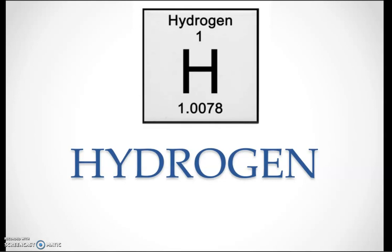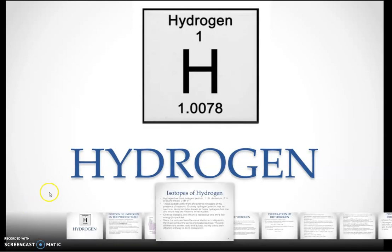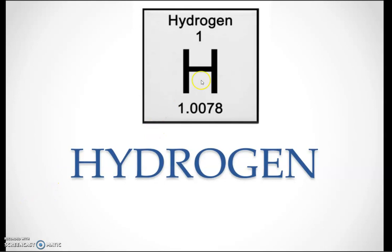If we take hydrogen, it doesn't have neutrons — only a proton and an electron. Hydrogen is represented by the symbol H.